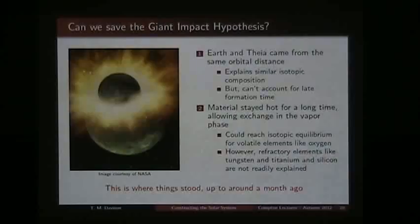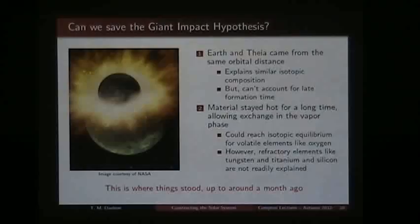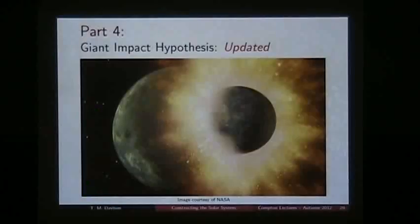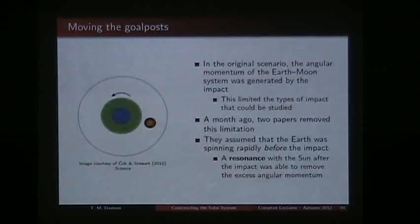Until about a month ago, that's where the understanding stood. Then three independent papers came out proposing ideas to overcome this obstacle for the giant impact hypothesis. Two of them share a common approach: removing the constraint that the impact itself must generate all the angular momentum of the Earth-Moon system. If a resonance between the moon and the Earth — similar to resonances we've discussed for asteroids — could remove excess angular momentum after formation, then a wider range of impacts becomes possible.